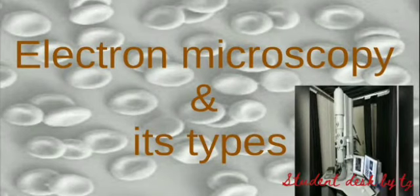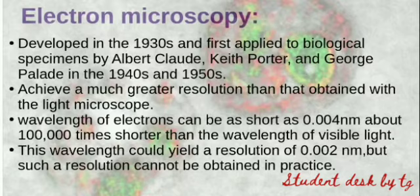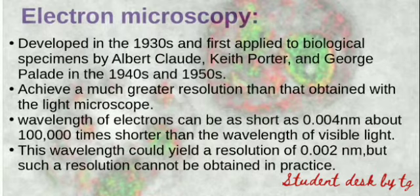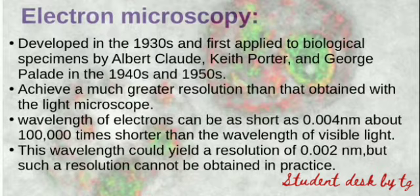Today we are going to discuss electron microscopy and its types — this is our last type of microscopy. Albert Claude discovered it in the 1930s and first used it for biological specimens. Then other scientists like Kate Porter and George Palade discovered it in the 1940s and 1950s.